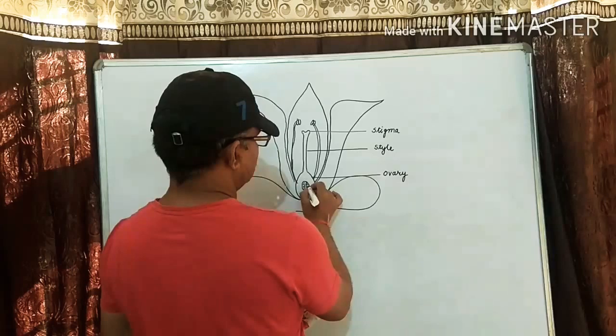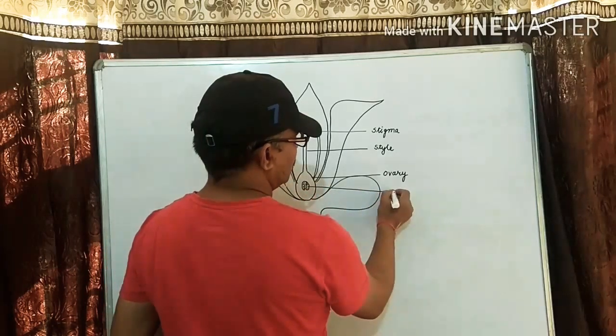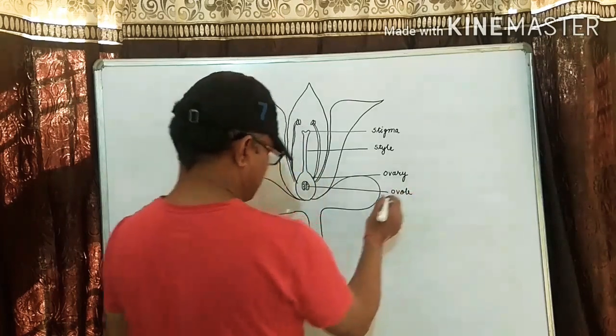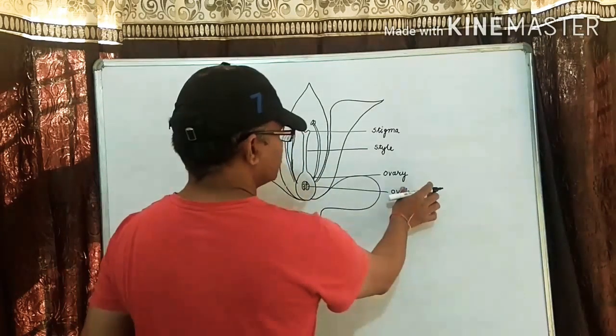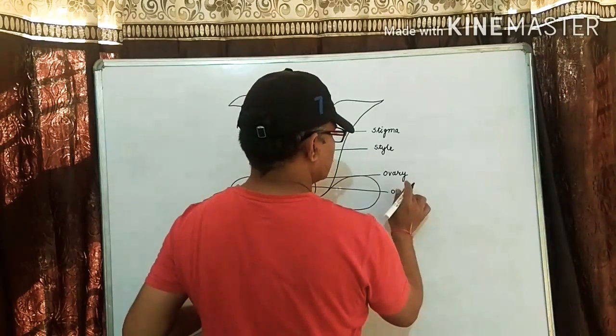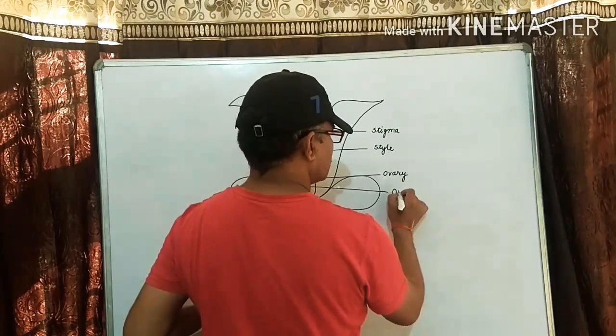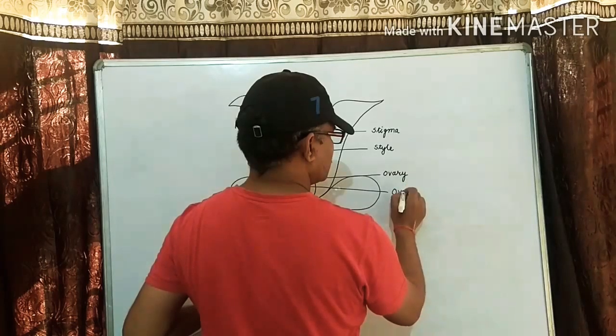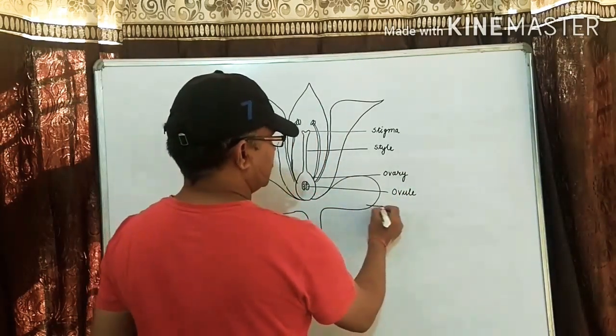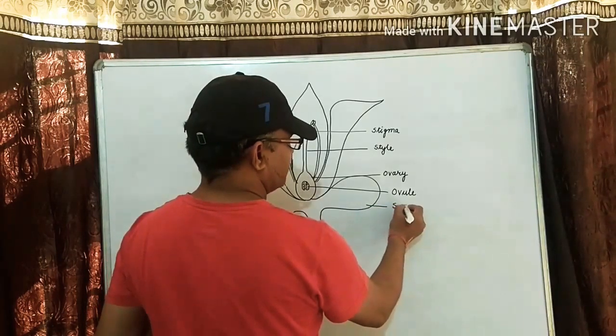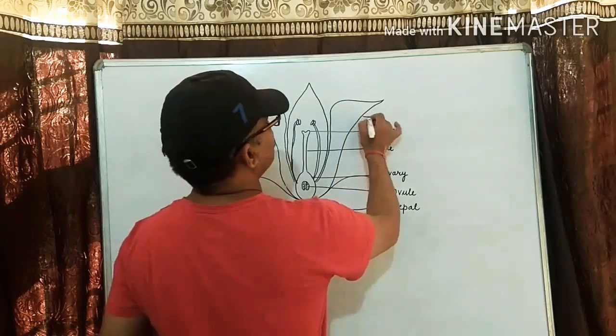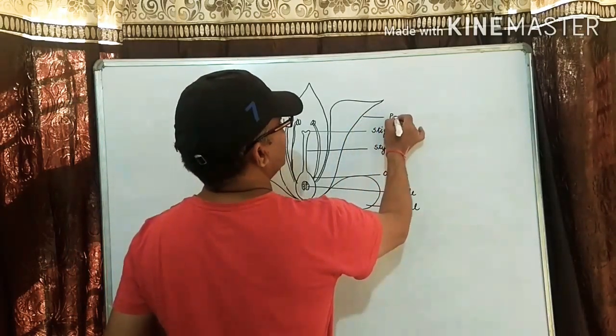This is ovule. What is this green part? Sepal. And this is known as petal.